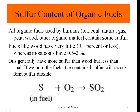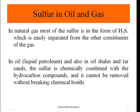Oil generally has more sulfur than wood but less than coal. So we can say coal has the most sulfur, then oil, then wood. When you burn fuels that contain sulfur, the sulfur content will mostly form sulfur dioxide. Here, the sulfur in fuel undergoes combustion — it reacts with oxygen and produces SO₂.